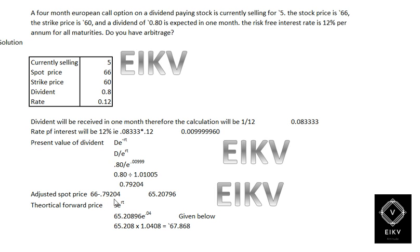The theoretical forward price would be the adjusted spot price raised to rt, that is S times e raised to rt, which is equal to 65.208 times e raised to 0.04, which equals 65.208 into 1.04, giving a theoretical forward price of 67.89.